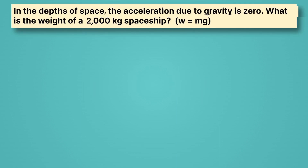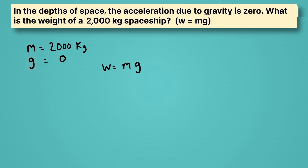This problem says: in the depths of space, the acceleration due to gravity is zero. What is the weight of a 2,000-kilogram spaceship? Our knowns are mass equals 2,000 kilograms and the acceleration due to gravity is zero. Weight equals mass times gravity: 2,000 kilograms times zero equals zero. You're weightless in the depths of space if gravity is zero.